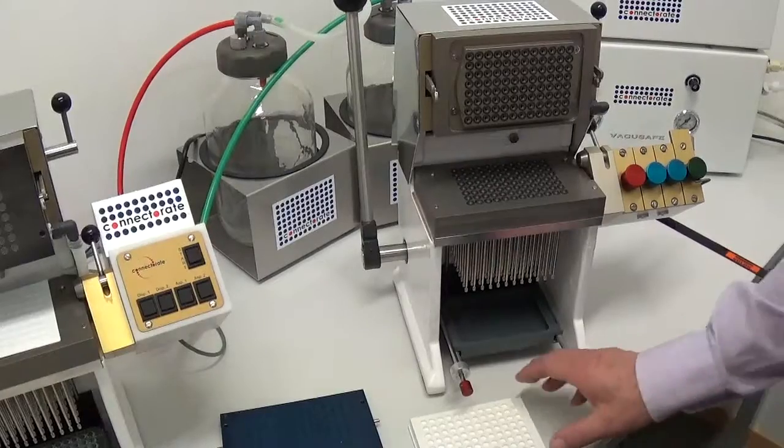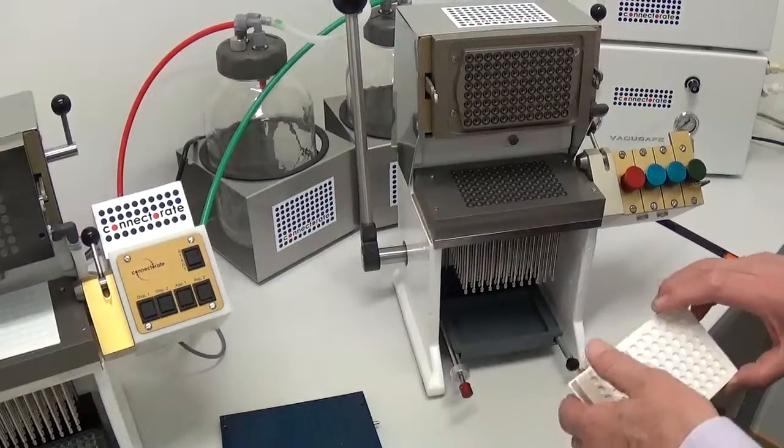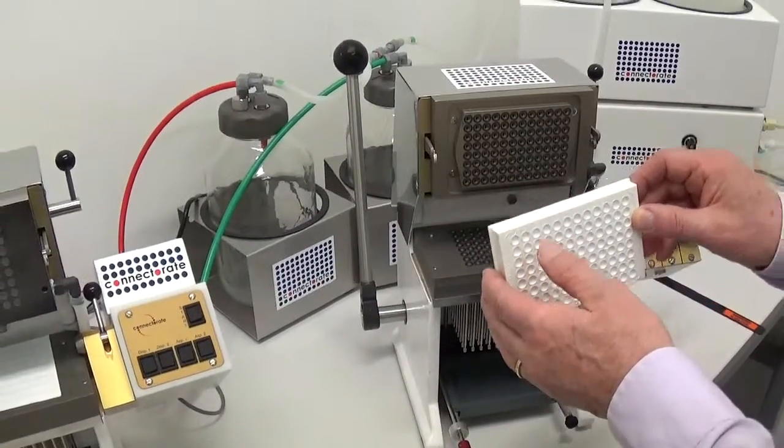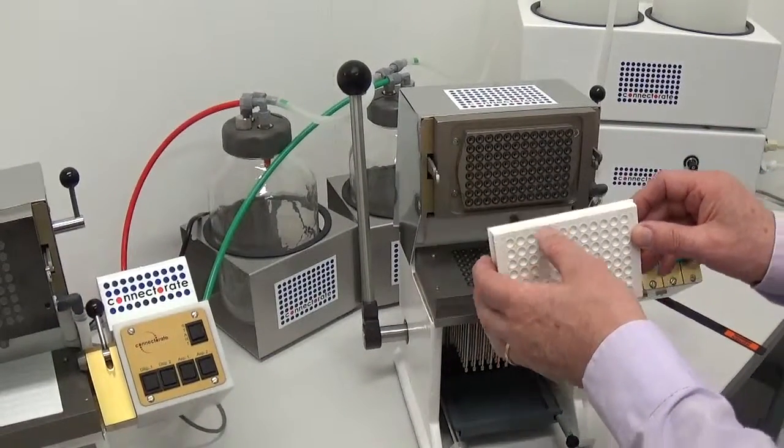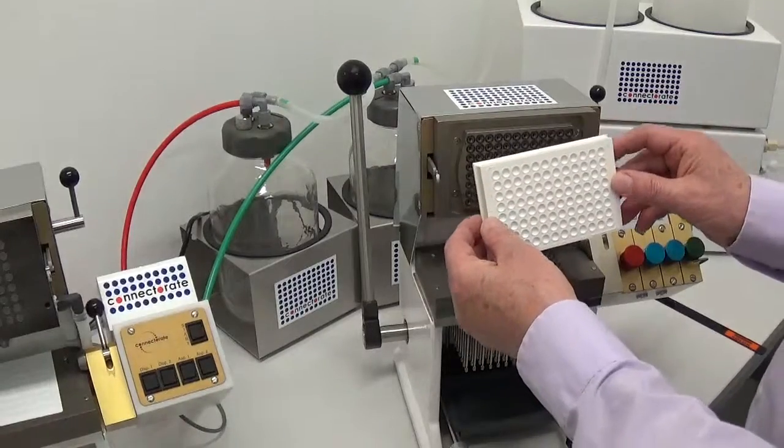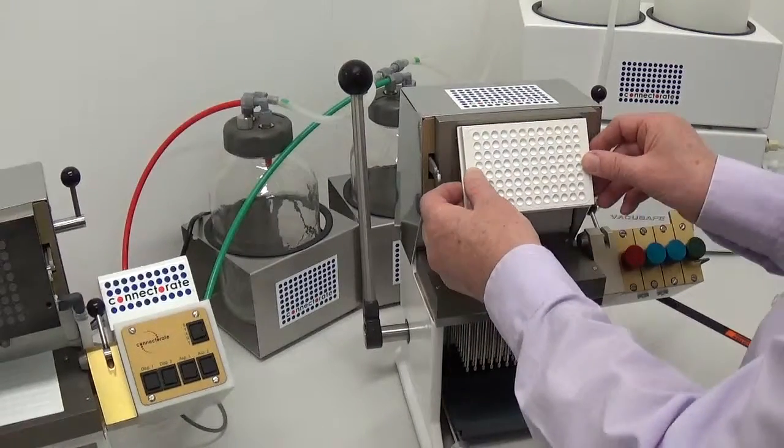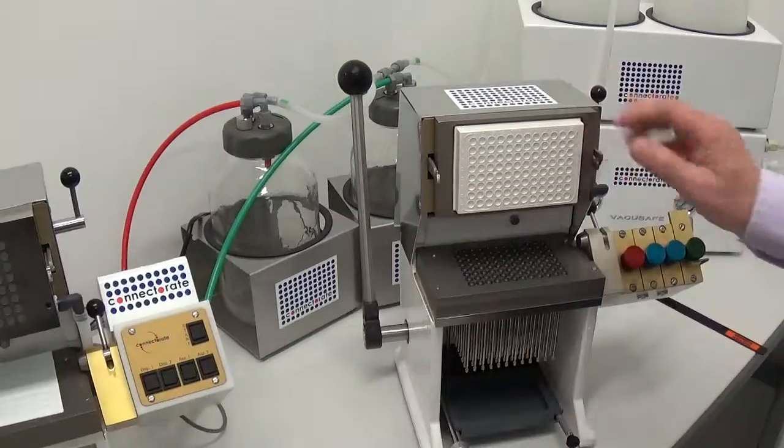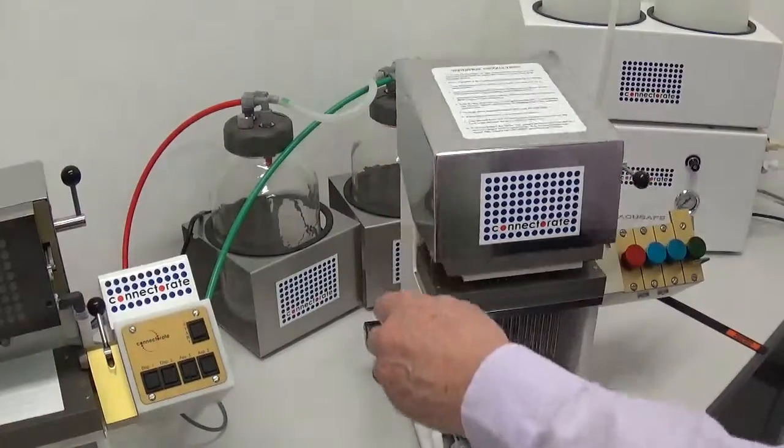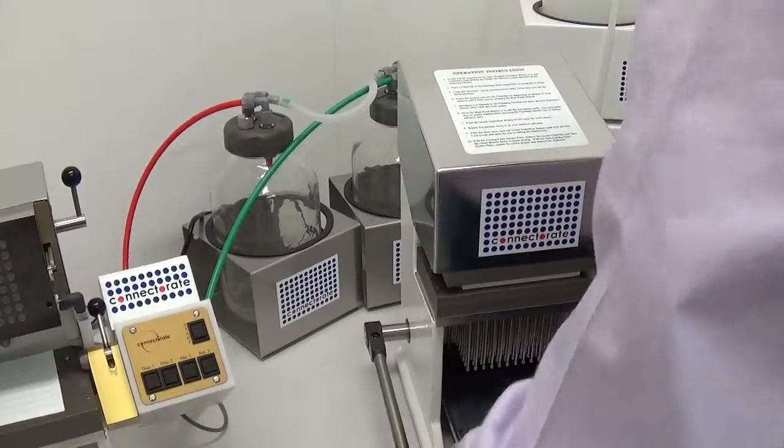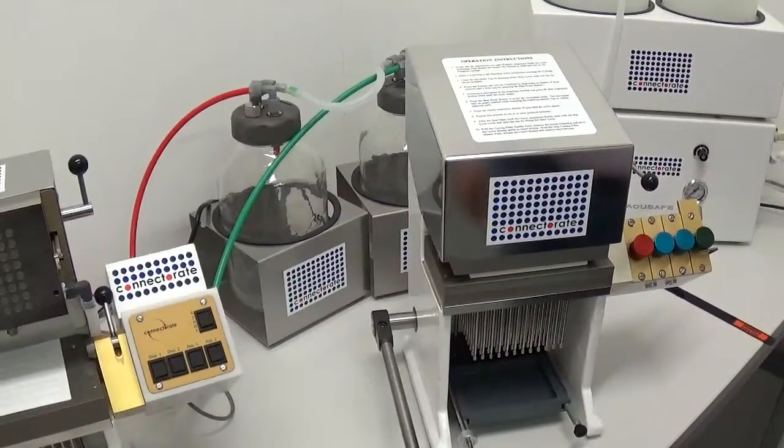Instead, the filter plate is firmly mounted in the upper protruding head of the harvester. Then close the harvester and you can start the operation.